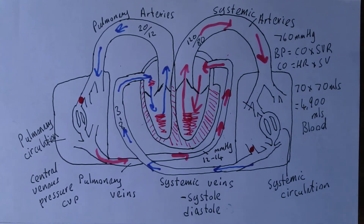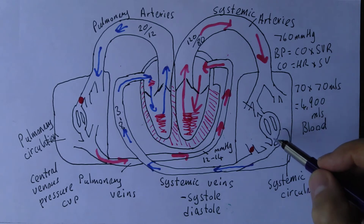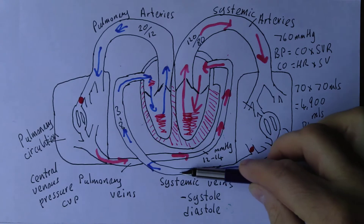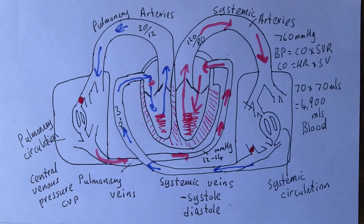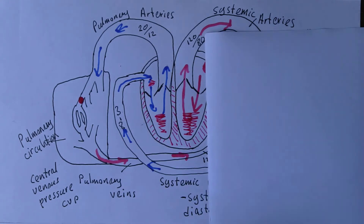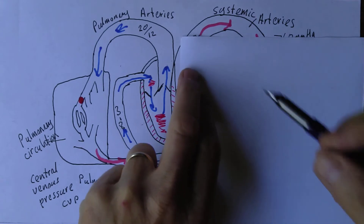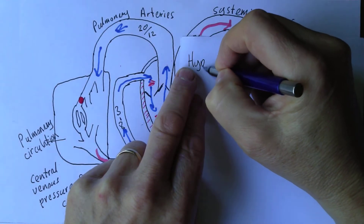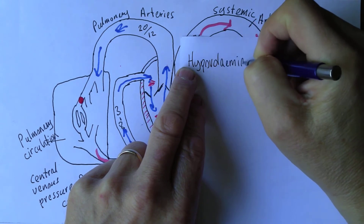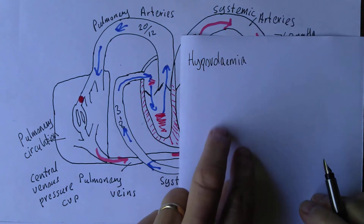We now want to think about the systemic veins. This represents the body, so we have the systemic capillaries, the systemic venules draining into larger systemic veins, ultimately draining into the inferior and superior vena cava, which drain into the right atrium. There's a pressure of about three to eight millimeters of mercury in the central veins. If someone loses a lot of blood or fluid of any sort, they will eventually become hypovolemic — low blood volume.